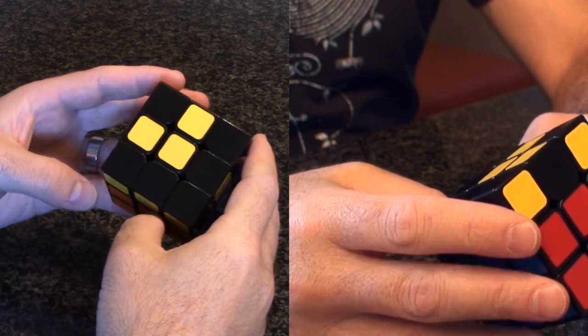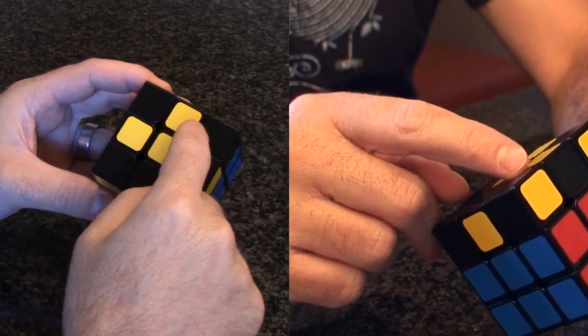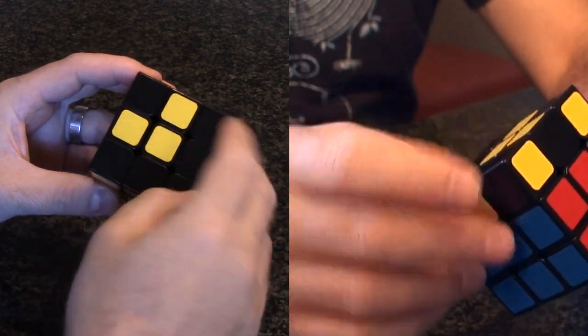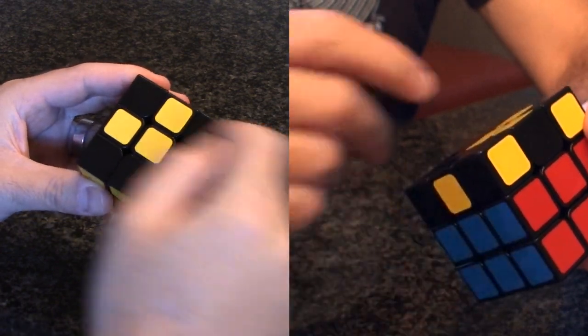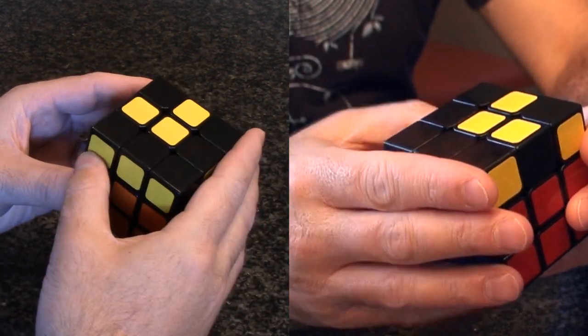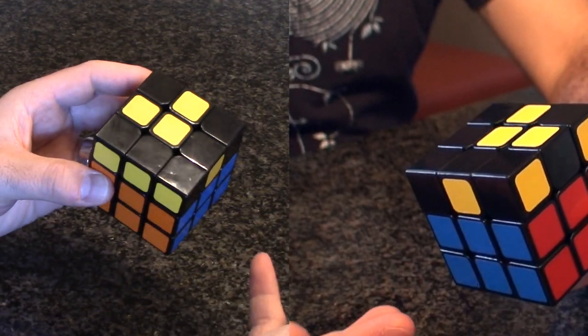In my last video I did a two look OLL and it explained what to do in the first look if you have an L. If you have a bar while you have the L you can actually do it pretty easily in one look.